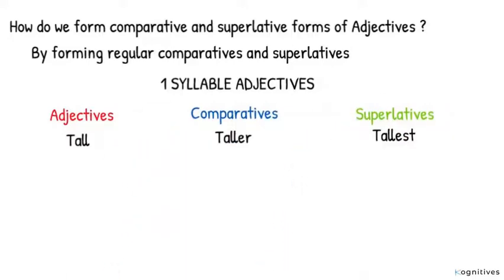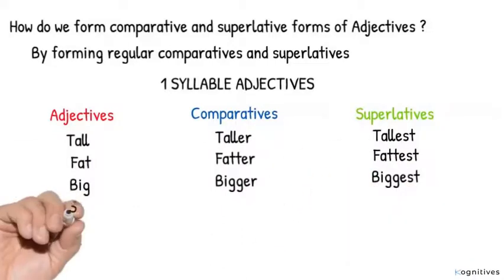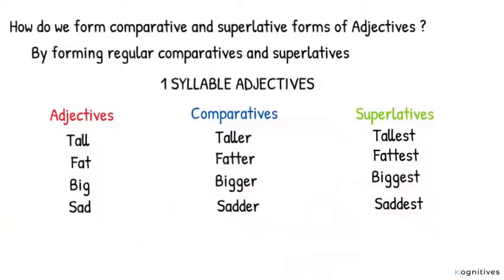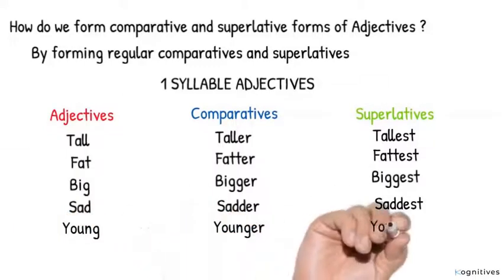Two: Fat, fatter, fattest. Three: Big, bigger, biggest. Four: Sad, sadder, saddest. Five: Young, younger, youngest.